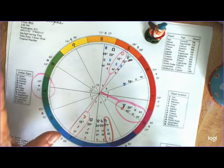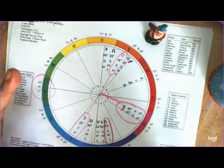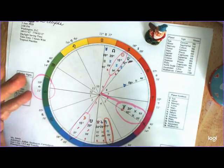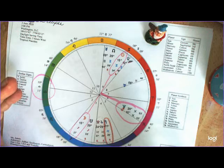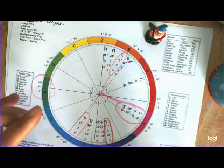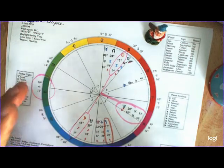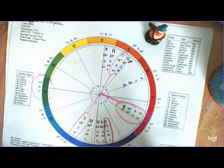Venus is a soft, graceful, receptive, feminine planet, and it's under the orbit, the much too close, uncomfortable orbit and domination of a hot, dry, fiery planet.